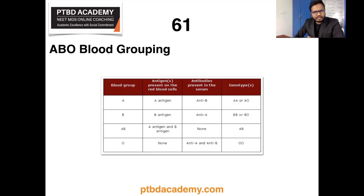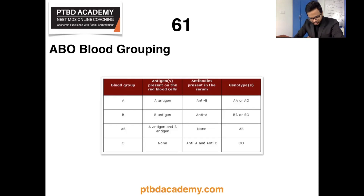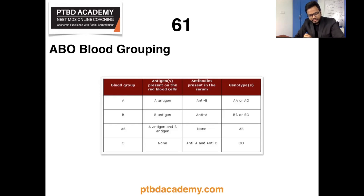Another key concept is antigen H, which is present in all blood groups because it is considered a precursor for the formation of various other blood group antigens. H antigen is found on virtually all RBCs and is considered the building block for production of antigens within the ABO blood type.